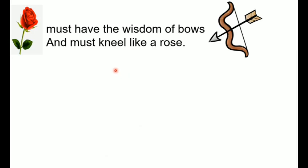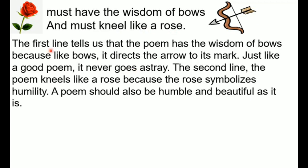Here's another two-line poem. It refers to a rose: 'must have the wisdom of both' and 'must kneel like a rose.' The first line tells us the poem has the wisdom of both, directing its arrows to its mark — just like a good poem, it never goes astray. The second line tells us the poem kneels like a rose because the rose symbolizes humility, so a poem should also be humble.